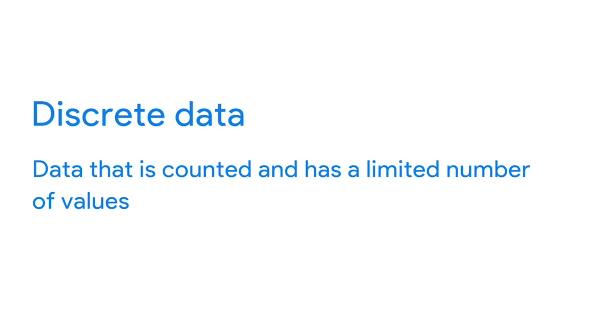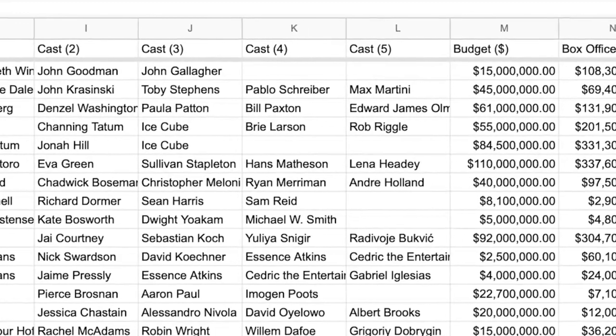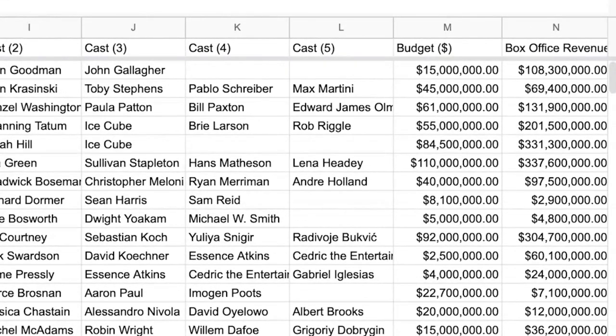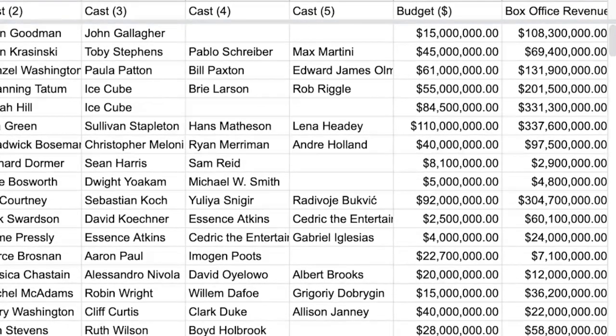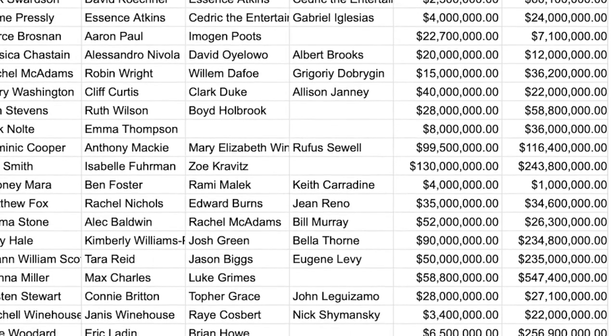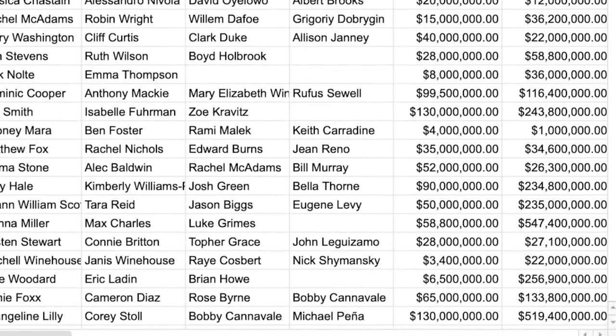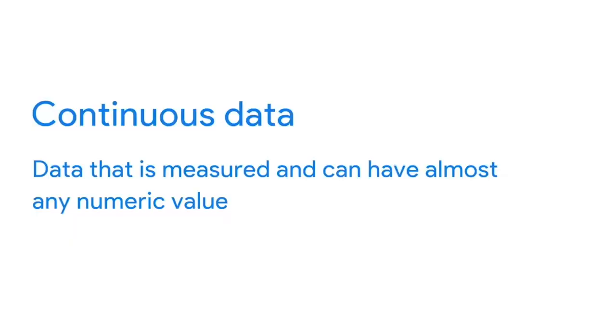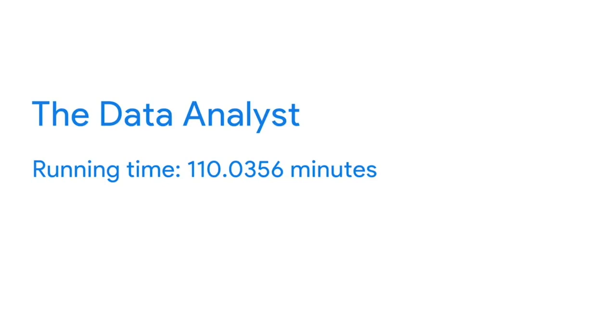We can go even deeper into quantitative data and break it down into discrete or continuous data. Discrete data is data that's counted and has a limited number of values. Going back to our spreadsheet, we'll find each movie's budget and box office returns in columns M and N — both examples of discrete data. They can be counted and have a limited number of values. For example, the amount of money a movie makes can only be represented with exactly two digits after the decimal to represent cents. Continuous data can be measured using a timer and its value can be shown as a decimal with several places. You could express a movie's runtime as 110.0356 minutes, and you could add fractional data after the decimal point if you needed to.